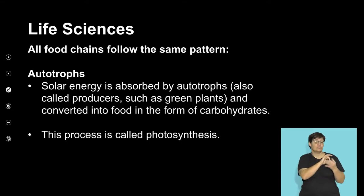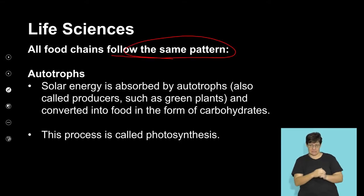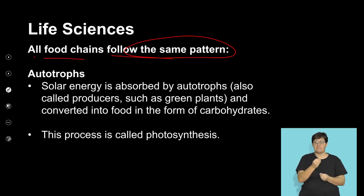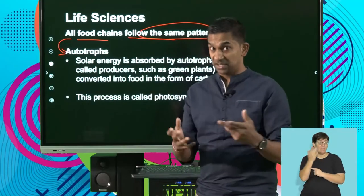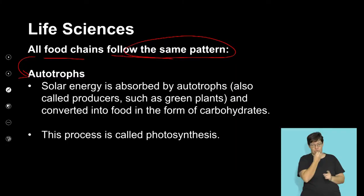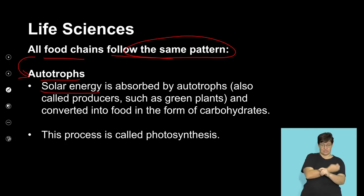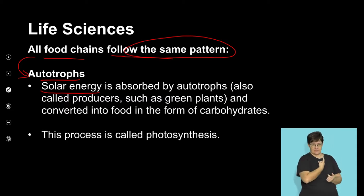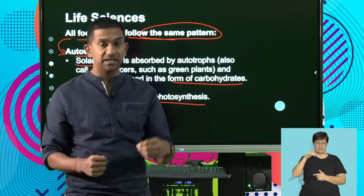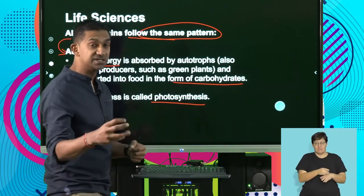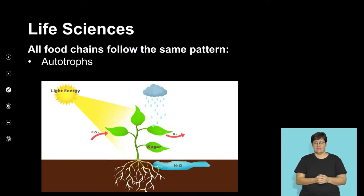In all food chains, it's important to follow a pattern — they always start with autotrophs at the bottom. An autotroph is an organism capable of producing its own food; plants do this by photosynthesizing, using solar energy which is converted into chemical energy or carbohydrates. All food chains must begin with autotrophs, which are the primary producers.